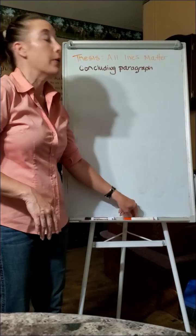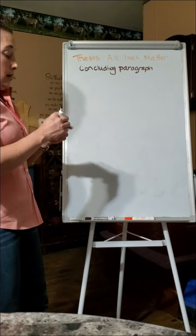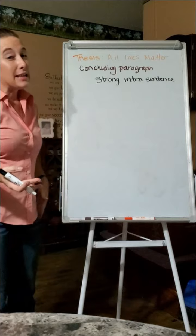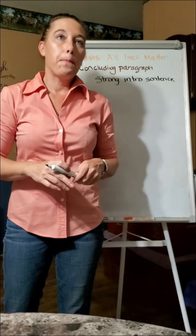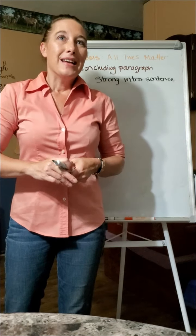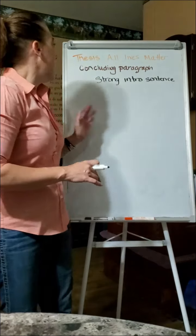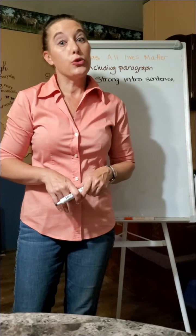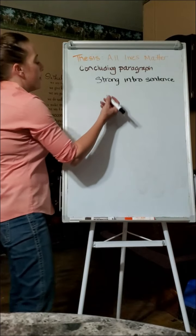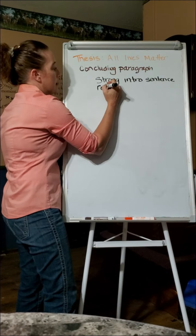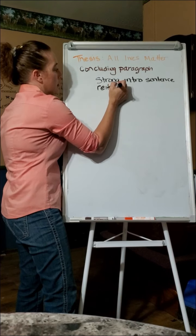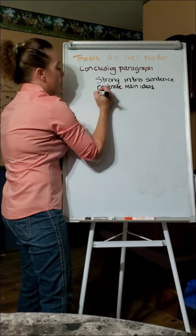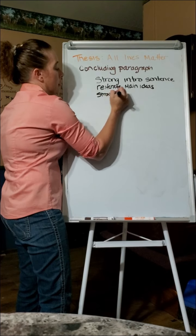Your concluding paragraph is going to have to have a strong intro sentence, which is basically a topic sentence. However, technically, concluding paragraphs don't ask for a topic sentence. However, you do need a strong sentence at the very beginning. And then you are going to reiterate the main ideas, and you need a strong concluding sentence.